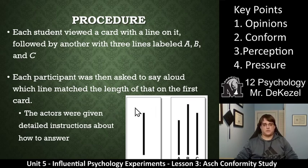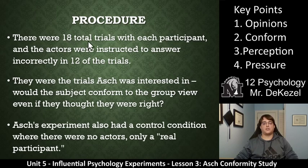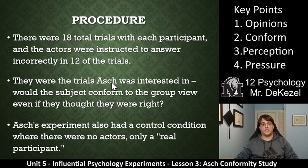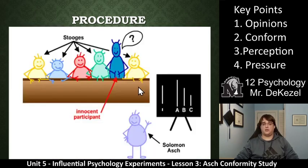So in the experiment, the actors were given detailed instructions about how to answer. There were 18 trials — 18 times there were lines matched up with the other lines on the card. Each participant and the actors were instructed to answer incorrectly on 12 of the trials. Those were the trials that Asch was interested in: would the subject conform to the group view, even though they thought they were right? Asch's experiment also had a control condition where there were no actors, only real participants.